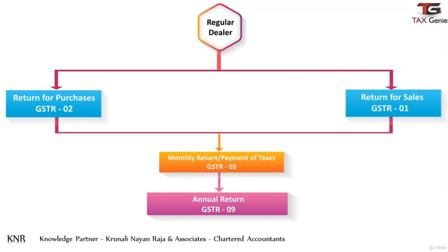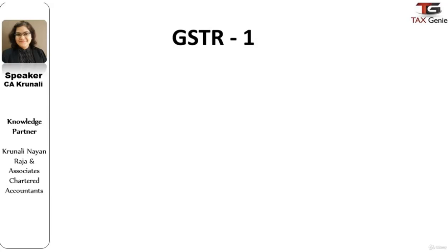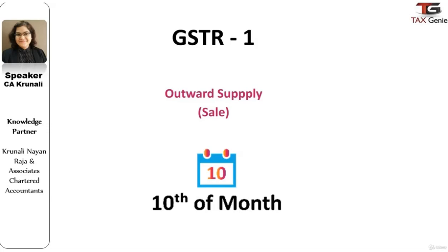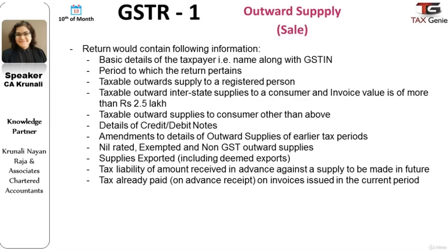All four returns have to be filed by each registered regular dealer. Now let us see what important details need to be furnished for each return in order to have timely filing without any error. Starting with GST Return 1 — this return is for outward supplies and is due by the 10th of the following month, which means if the return is for July 2017, the due date would be the 10th of August 2017.